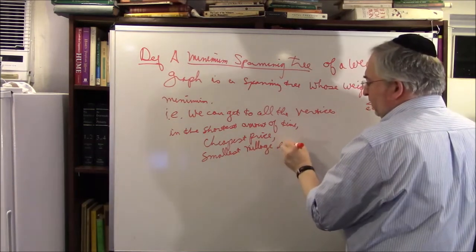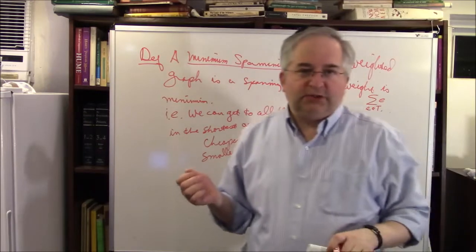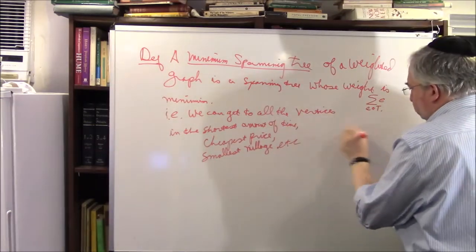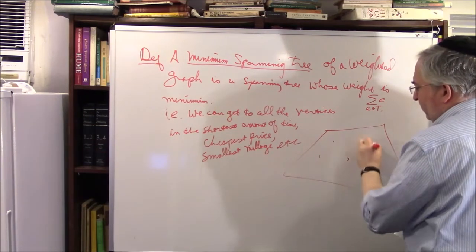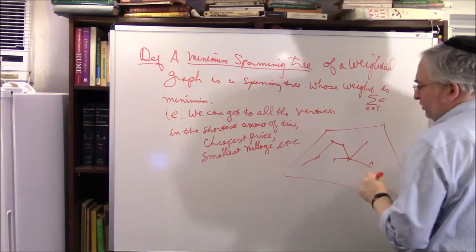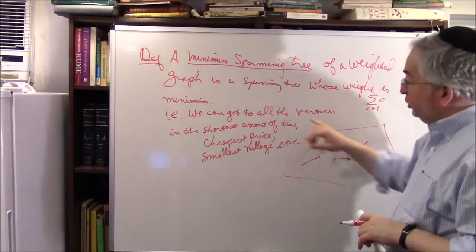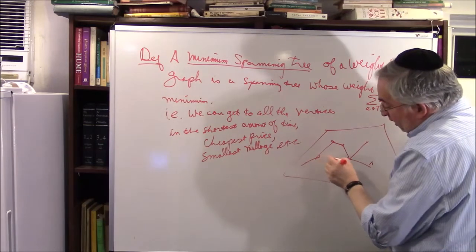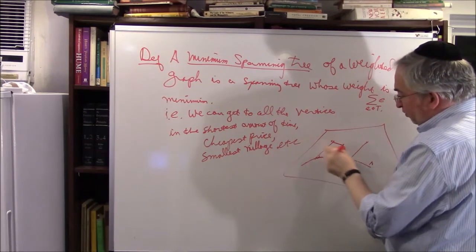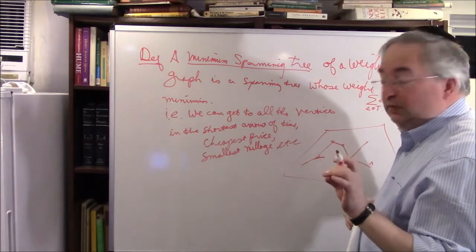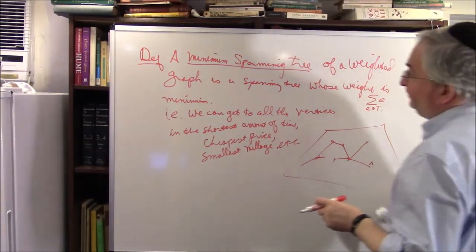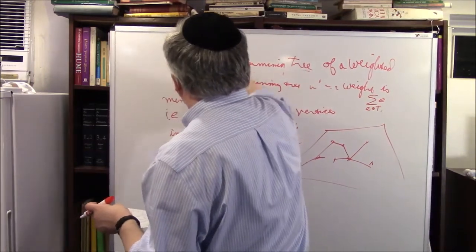This is the motivation: you have a bunch of cities you have to visit, and you want some type of tree connecting them. You don't want any cycles because it doesn't make sense — if you want to get from here to there, should you go this way or go around? You want one way to get to every single node. That's why it's a tree, and also you want it to have the shortest price.